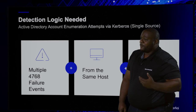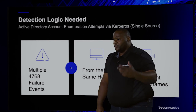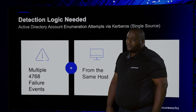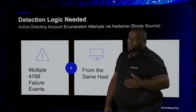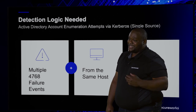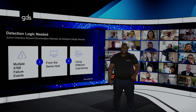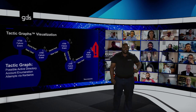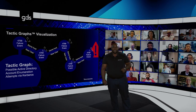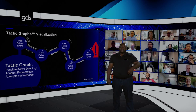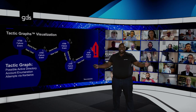So what logic will we need for our example? With all the things we were looking at previously, we can see that multiple 4768 events are a must — let's say five or more. We want to pull in events that have the same host, and because we know how the attack works, we want to make sure everything has a different username that it's trying to authenticate to. When we put this in our Tacticraph visualization, each node represents a 4768 event, and the conditions of each edge are same host, new username. With this, we can express the logic of a possible Active Directory account enumeration attempt via Kerberos as a Tacticraph rule. Congratulations — you just made your first Tacticraph.